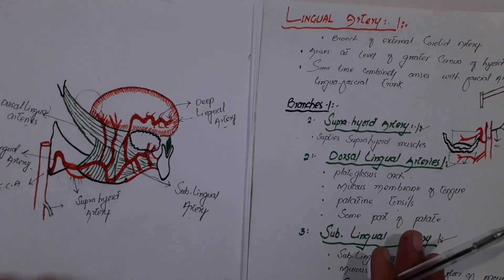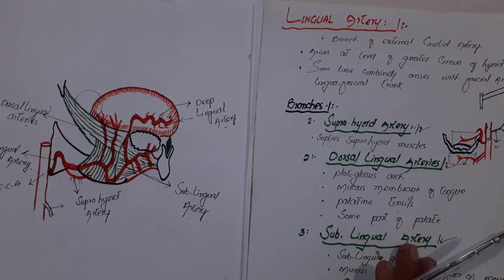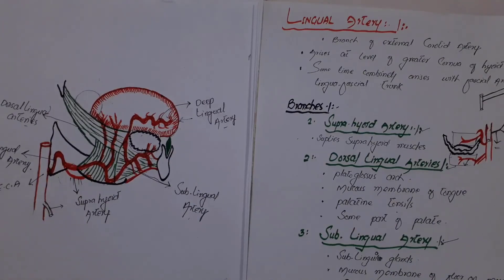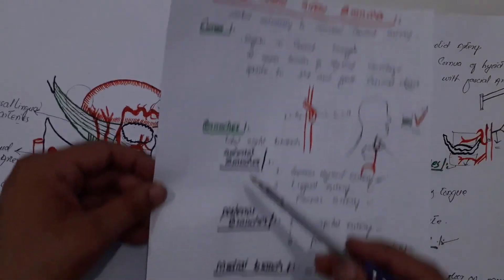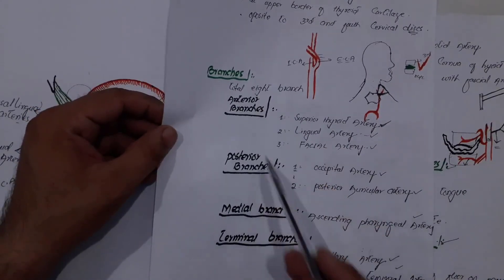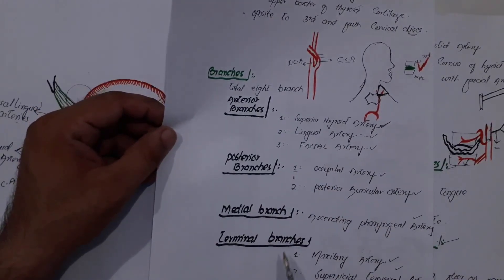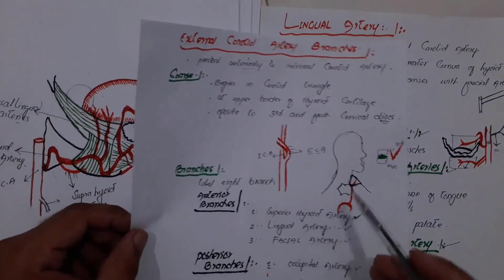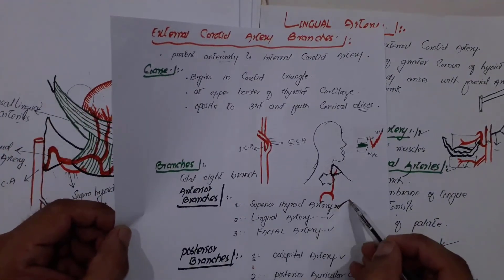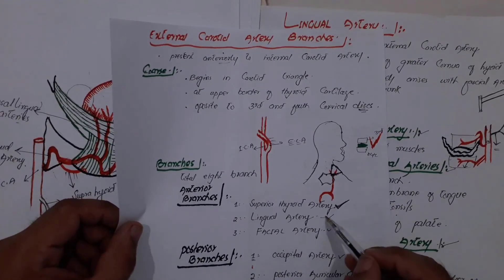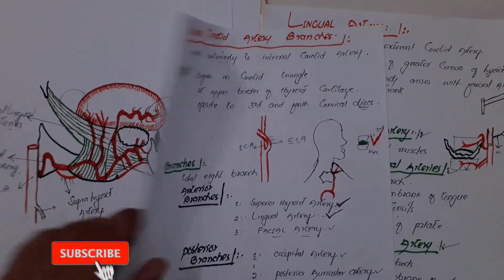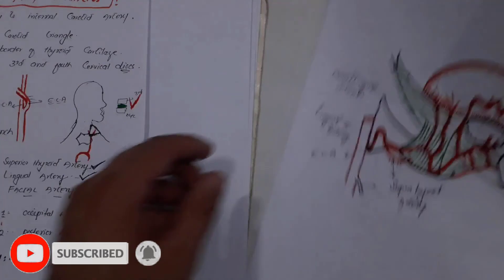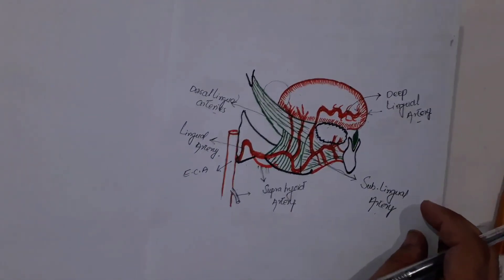This was about the lingual artery. In the next lecture we will record about the facial artery, which is the third branch. As mentioned previously, the external carotid artery gives off eight branches in four groups: anterior branches, posterior branches, a medial branch, and terminal branches. We have discussed the superior thyroid artery and the lingual artery in the anterior group. In the next lecture we will discuss the facial artery. Thank you so much — if you like the lectures, please subscribe to our channel.